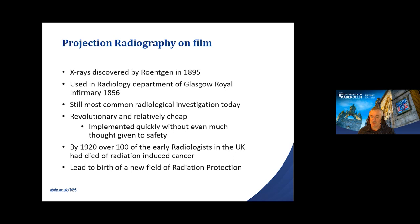By 1920, over 100 of the early radiologists in the UK had died of radiation-induced cancer, and Roentgen himself died of colon cancer in 1923. So not only did Roentgen give birth to medical imaging, he also gave birth to another field we consider in our MSc programmes — that of radiation protection. He was awarded the first ever Nobel Prize in Physics in 1901, and he is doubly important for these reasons.